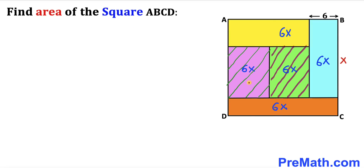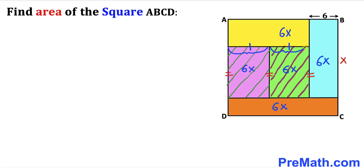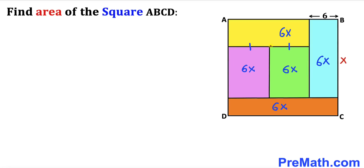Now let's focus on the purple and green rectangles. Their areas are identical, and their corresponding side lengths are the same. Therefore, we conclude that this side length equals this side length — in other words, these two side lengths are equal.